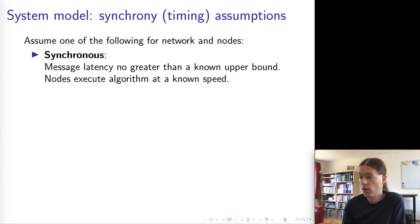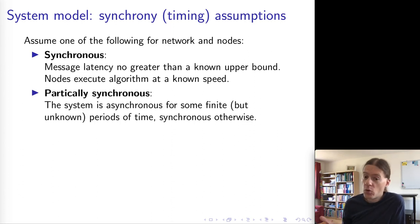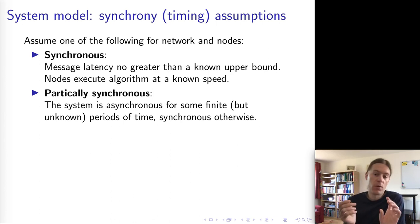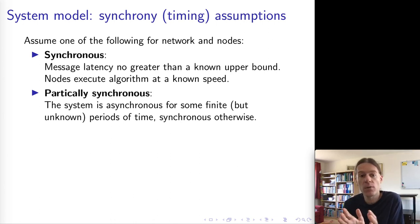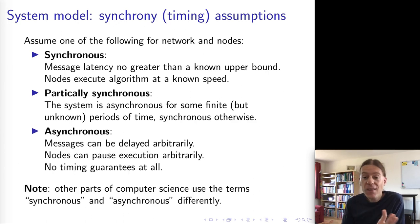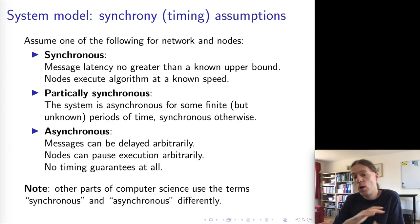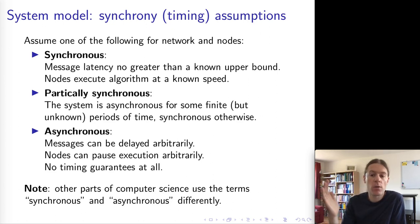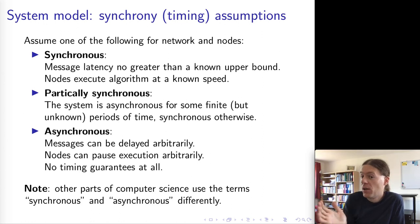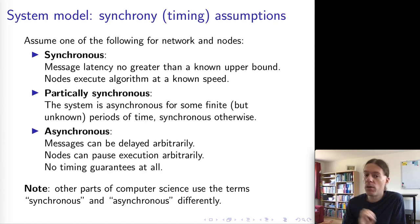Another assumption is a partially synchronous model, where for some periods of time the system behaves synchronously, and for other periods asynchronously. In an asynchronous model, we make no timing assumptions at all — a message might arrive in 20 years, there's no upper bound on message latency. Messages are mostly delivered quite quickly, but we don't assume any maximum latency. Moreover, we don't assume anything about how fast nodes execute the algorithm — a node might pause execution at any moment, stop executing for a while, and then later resume.